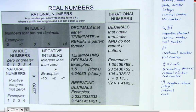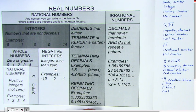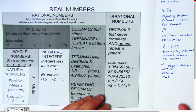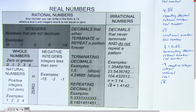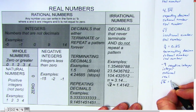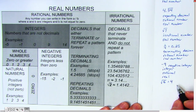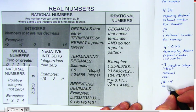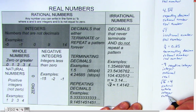One more note about square roots: do not assume that square roots are always irrational. For example, the square root of 16 is 4. The number 4 is a natural number, a whole number, an integer, a rational number, and a real number.